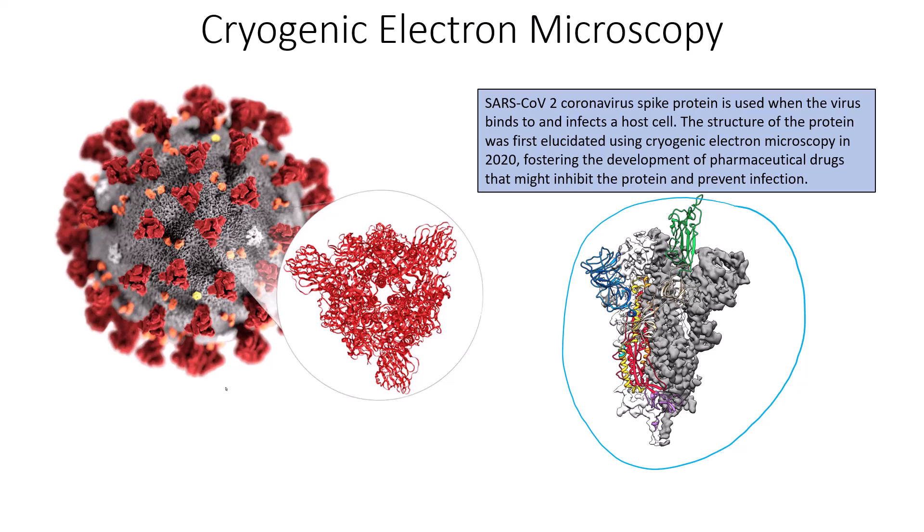Viruses contain their own DNA or RNA, and they have to inject that DNA or RNA into the host cell. A lot of times they use these spike proteins to help bind to and infect the host cell.